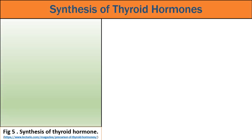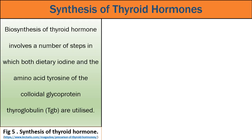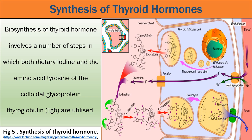Let us study about the biosynthesis of thyroid hormone — how T3 and T4 are produced. In the formation of T3 and T4, both dietary iodine as well as the amino acid tyrosine are used. If we consider one follicular cell as shown in the figure, the membrane near the blood vessel is the basal membrane and the membrane facing towards the lumen is the apical membrane. Iodine is collected from the blood, thyroglobulin is produced and released into the lumen, and T3 and T4 are produced in the colloid and then taken up for release into the blood.